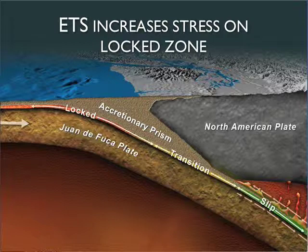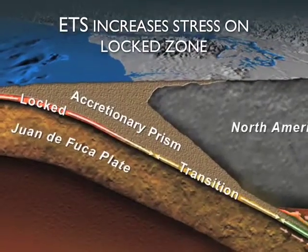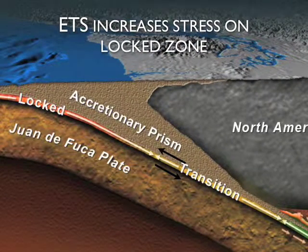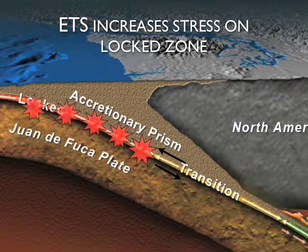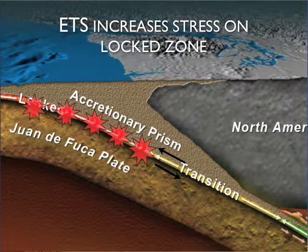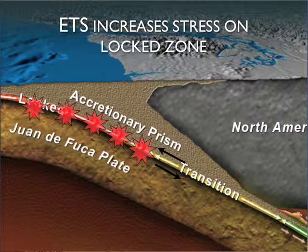...right there you zero in and put in one of these small earthquakes — well, magnitude 6 isn't that small — will that increase the stress on the locked zone just up-dip, such that it might push it over the edge, past its failure point? It would then start ripping up the locked zone and along the Cascadia fault zone, generating your magnitude 9 earthquake.